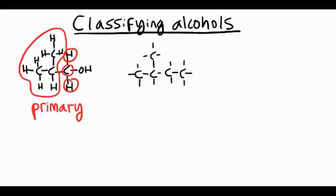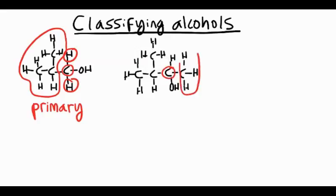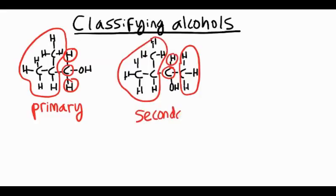Let's have a look at another example. We've got four carbons in the chain with a methyl group coming off one of them and an OH group coming off another. Look at that carbon that the OH group is attached to — we've got a methyl group there, then another alkyl group on the other side, and one hydrogen. Two alkyl groups and one hydrogen makes it secondary.